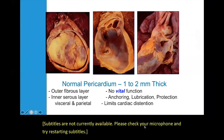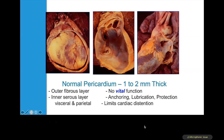The normal pericardium is about one to two millimeters thick. It has the outer fibrous layer and the inner serous layer. Both the visceral and parietal pericardial layers provide support during cardiac motion by anchoring cardiac structures. It provides lubrication and to some degree a protective function to the epicardial surface. Most importantly, it prevents cardiac distention, particularly during diastole.